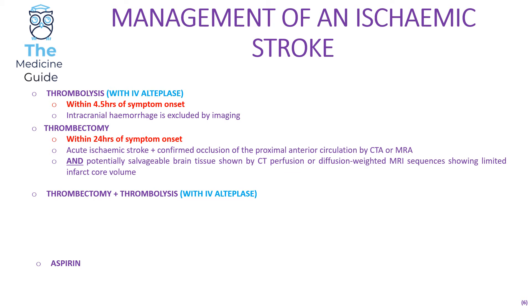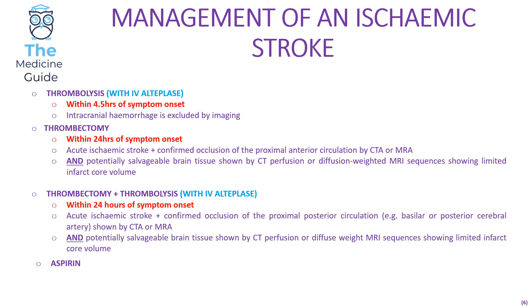A thrombectomy can be performed within 24 hours of symptom onset in patients with acute ischemic stroke where there is confirmed occlusion of the proximal anterior circulation by CT angiogram or MR angiogram, and potentially salvageable brain tissue is shown by CT perfusion or diffusion-weighted MRI sequencing showing limited infarct core volume. Thrombectomy and thrombolysis together can also be performed within 24 hours if there is confirmed occlusion of the proximal posterior circulation.